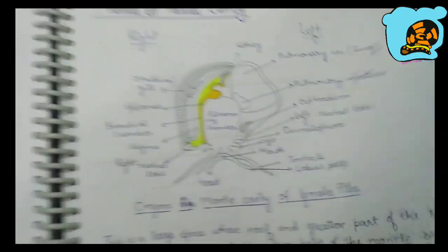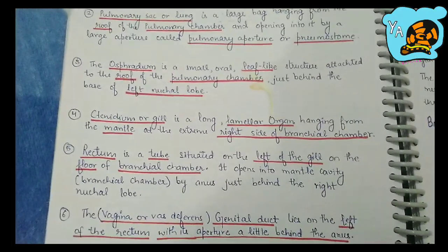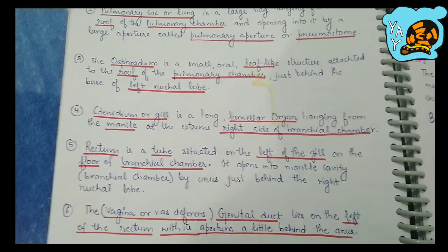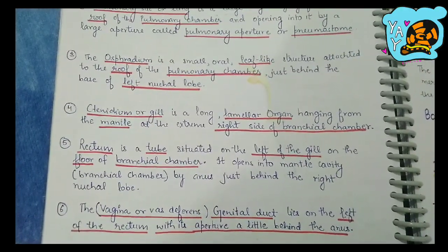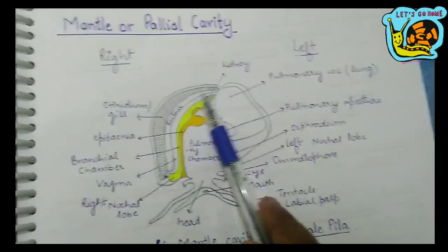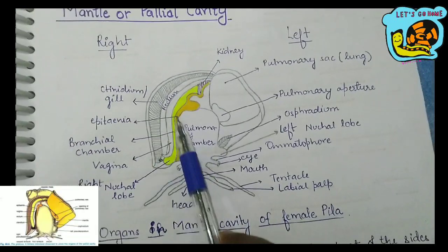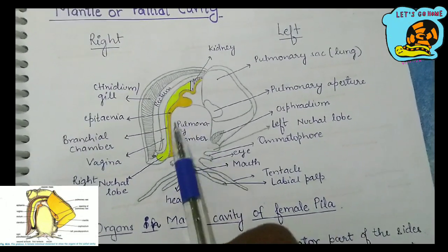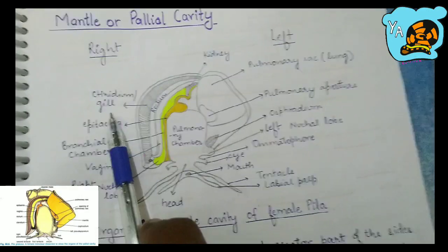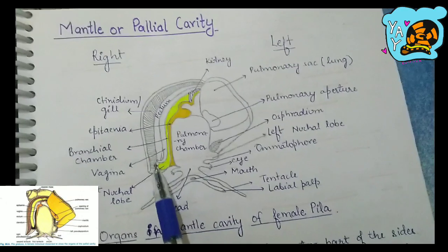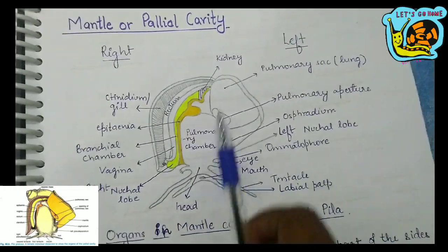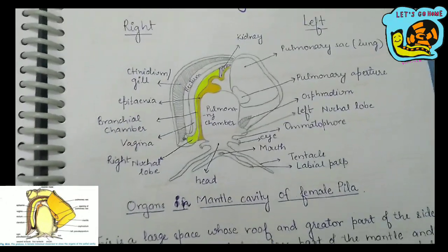The next organ in the mantle cavity is the ctenidium or gill. It is a very long lamellar organ hanging from the mantle at the extreme right side of the branchial chamber. This structure in the diagram represents the ctenidium or gill. It is a lamellar organ because the gills are formed of lamella. It hangs from the mantle cavity and extends to the floor of the body. The gill helps in respiration.